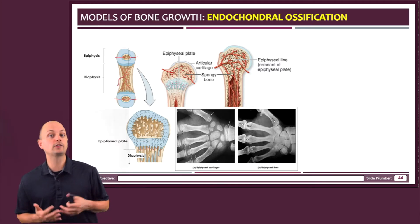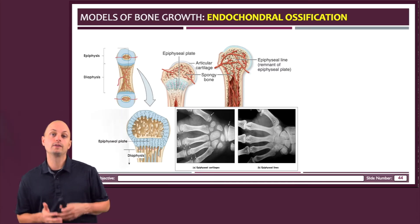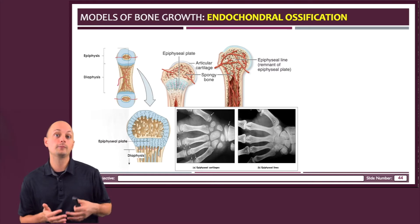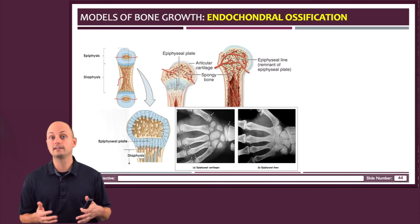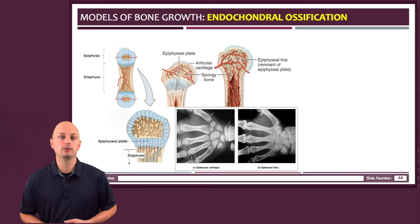In this region — the metaphysis — that's where we find the cartilage. So when the cartilage there becomes ossified, that makes it the primary site of bone growth as well.